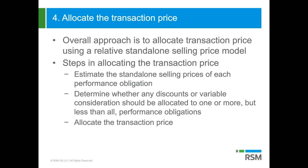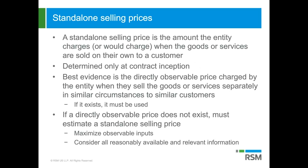What's the standalone selling price? It's the amount that the entity charges or would charge when they sell the goods or services on their own to a customer. You make this determination only at contract inception. In existing GAAP under ASC 605, there's a general multiple element arrangement model with a three-level hierarchy that you use to identify the standalone selling price.